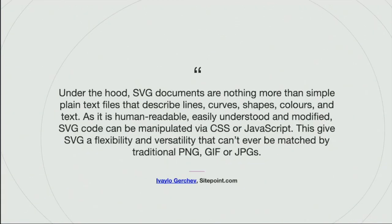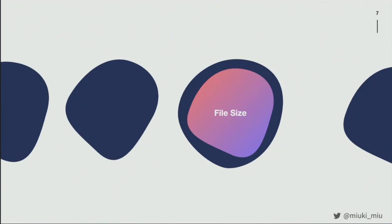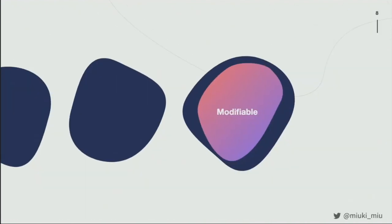Why is SVG different from GIFs, PNGs, and JPEGs? First, it's scalable — you can scale the image without loss of quality or fidelity. Another very good thing is the file size. If you have an SVG and you want to scale up the image, the file size is going to be the same because it's actually the size of the document. And the best thing about SVG compared to other images is that it's modifiable — you can use CSS and JavaScript to do awesome things.